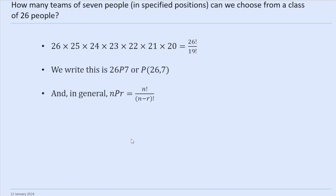How many teams of 7 people in specified positions can we choose from a class of 26 people? Say we've got a team of 7 and we want a goalkeeper, a fullback, a striker, whatever it might be. Then we've got 26 choices for the first, 25 for the next, 24 for the next, 23 and so on, times 20 — which we can write as 26 factorial over 19 factorial.